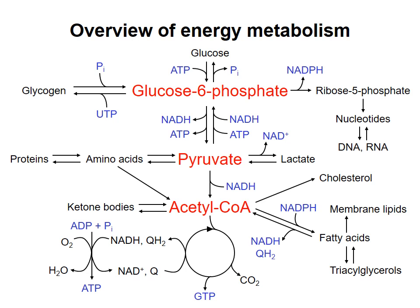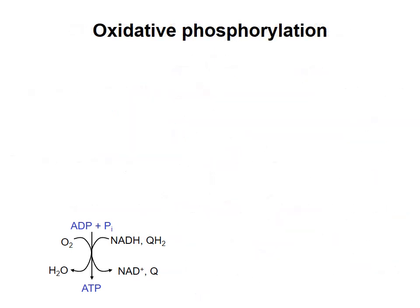In previous topics, we have seen how oxidation of carbon atoms in glucose, pyruvate, and acetyl-CoA results in transfer of electrons onto the electron carriers NADH and QH2. In this topic, I will explain how transfer of those electrons to molecular oxygen, O2, allows phosphorylation of ADP to produce ATP. This process is called oxidative phosphorylation.